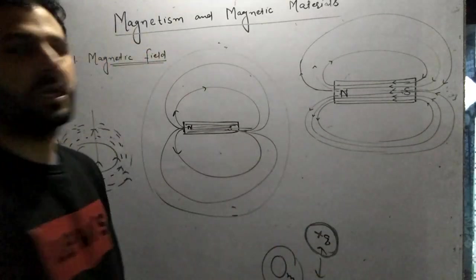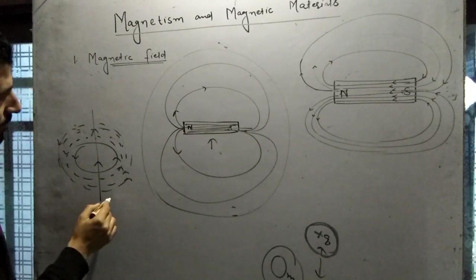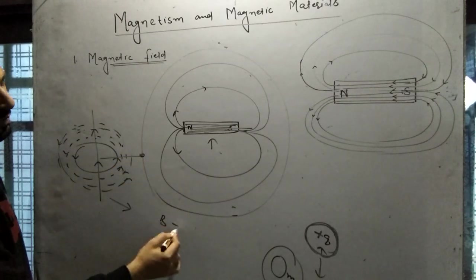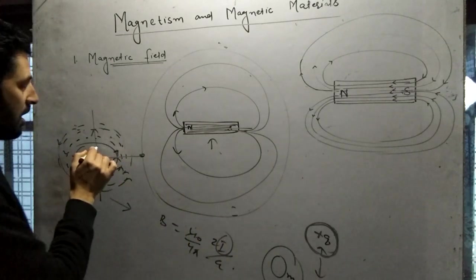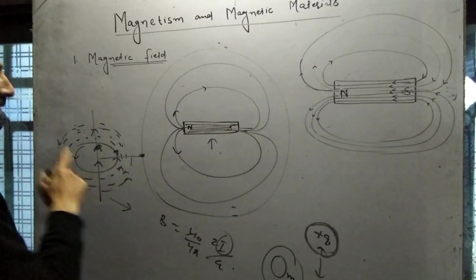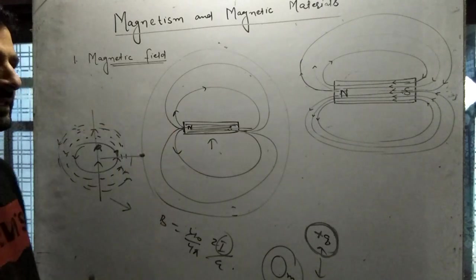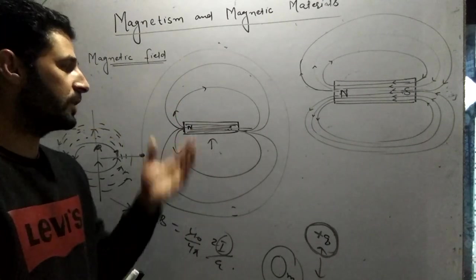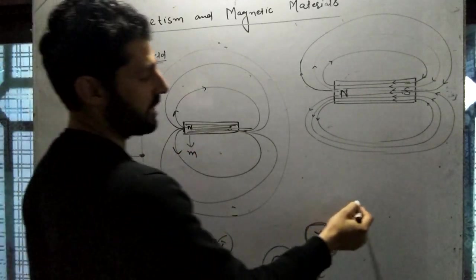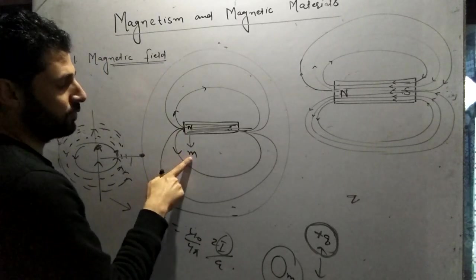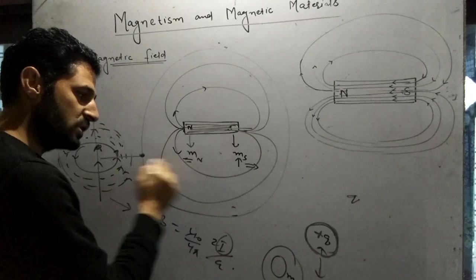The modification of space depends upon the magnitude of the source. For a current-carrying conductor, the magnetic field is given by B = (μ₀/4π)(2I/a), which depends upon the current I and the distance a from the conductor, as well as the medium. Similarly, for a bar magnet, the field depends on the pole strength. The pole strength of the north pole is denoted m_N and the south pole m_S, analogous to charge q in electrostatics.